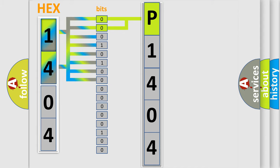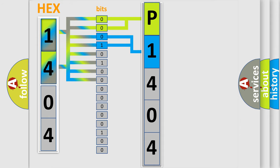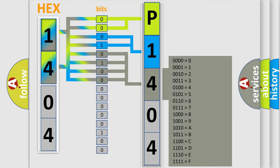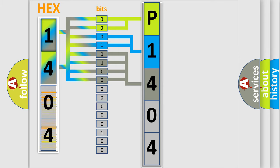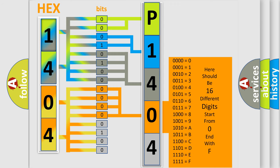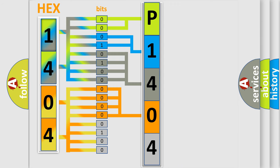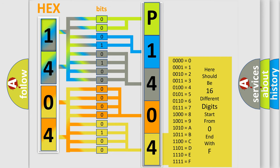The next two bits determine the second character. The last bits of the first byte define the third character of the code. The second byte is composed of a combination of eight bits. The first four bits determine the fourth character of the code, and the combination of the last four bits defines the fifth character. A single byte conceals 256 possible combinations.